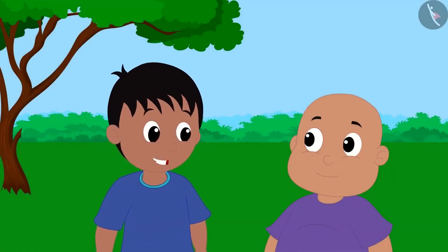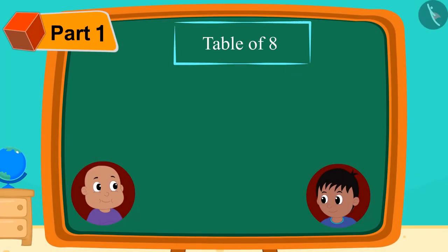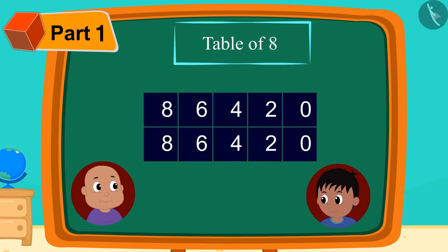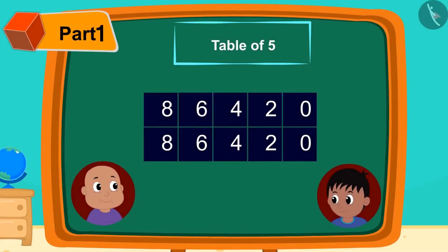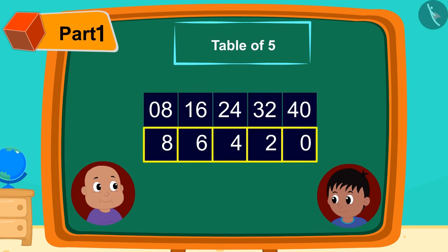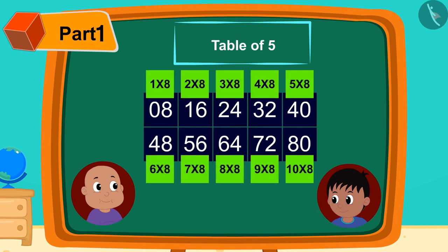Now Raju tells Babalu he can easily make a table of 8 using a similar pattern. Raju made such a table again. This time he filled the unit digits in reverse: 8, 6, 4, 2, 0. Then in front of the digits in the first line he wrote 0, 1, 2, 3, 4. Then in front of the digits in the second line he wrote 4, 5, 6, 7, 8. And the table of 8 was ready.